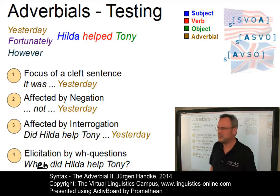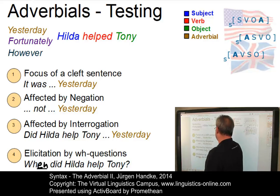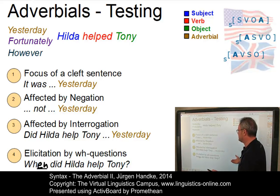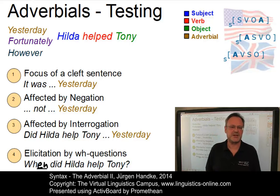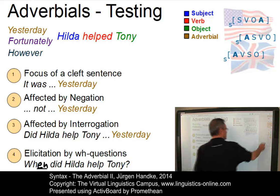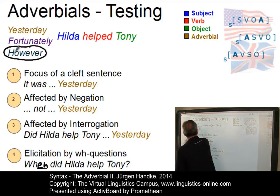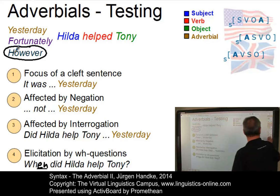If we take fortunately, we can see that only the first two criteria apply: 'It was fortunately that Hilda helped Tony' and 'Not fortunately, but surprisingly, we could say.' But 'Did Hilda help Tony fortunately?' runs into trouble, and for fortunately we do not have an elicitation element. And if we take however, it is certainly impossible in all these contexts — 'It was however', 'not however, but', 'Did Hilda help Tony however?' — and there is no elicitation element either.